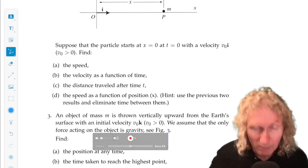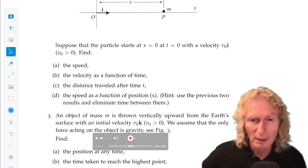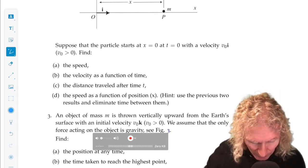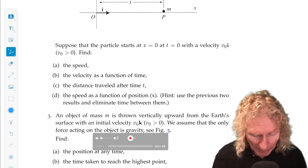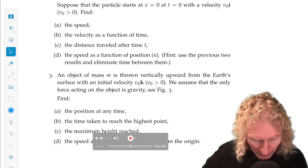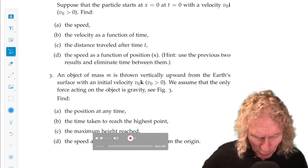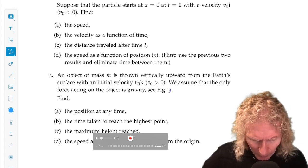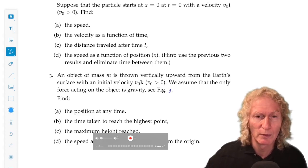And we can compute using the techniques of this chapter: the speed, magnitude of velocity, the velocity as a function of time, distance traveled after time t, and something a little bit different, the speed as a function of position. So we need to use the previous results to eliminate time and just get speed as a function of position.